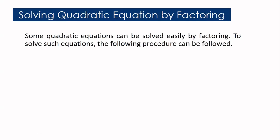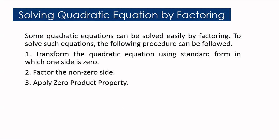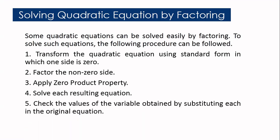Now, how are we going to use factoring in solving a quadratic equation? You are just going to follow these procedures. Step 1: Transform the quadratic equation to standard form in which one side is equal to zero. Step 2: Factor the non-zero side. Step 3: Apply the zero product property. Step 4: Solve each resulting equation. Step 5: Check the values of the variable obtained by substituting each in the original equation. Let us have illustrative examples using these procedures.